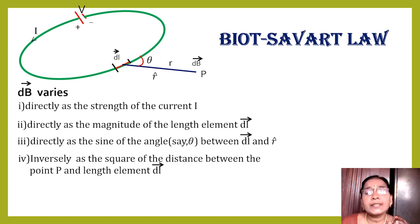That means, as the distance R increases, dB is going to decrease. If the point is nearer to the current carrying conductor, dB will be larger and if it is away, the magnitude of the magnetic field will be lesser.